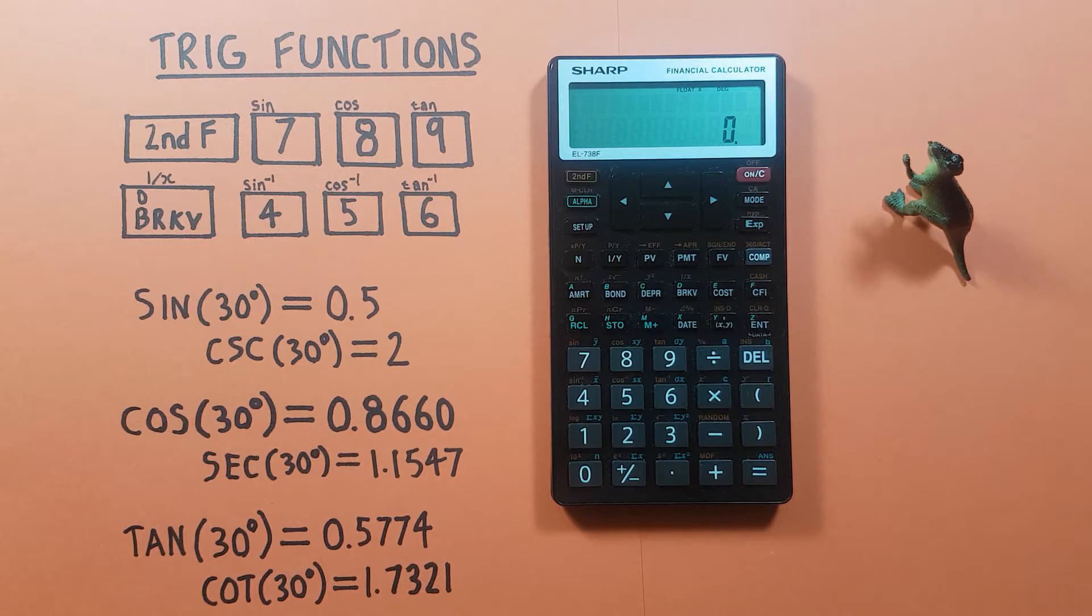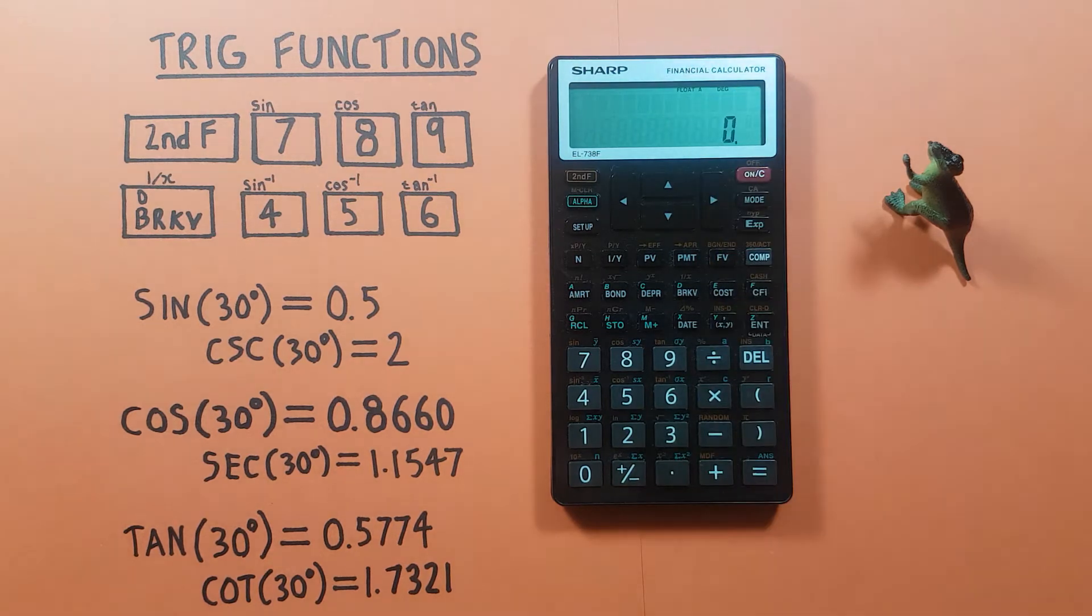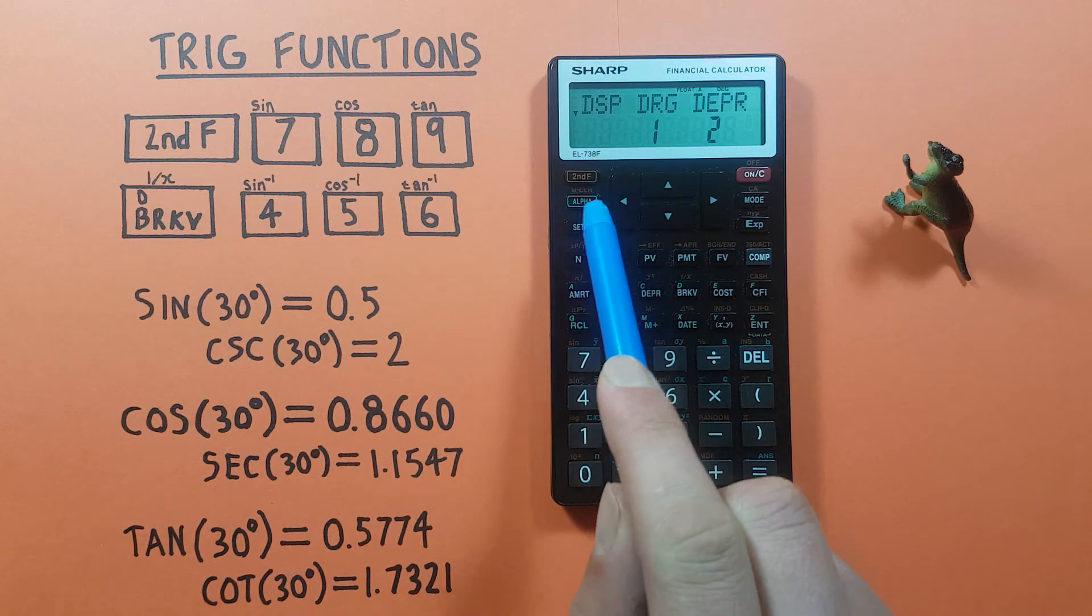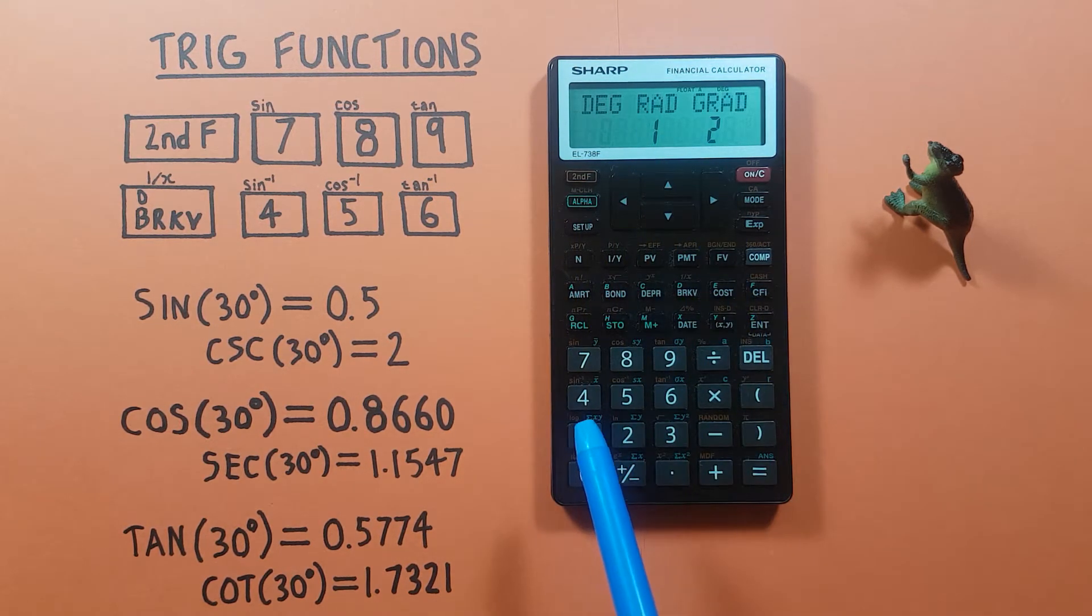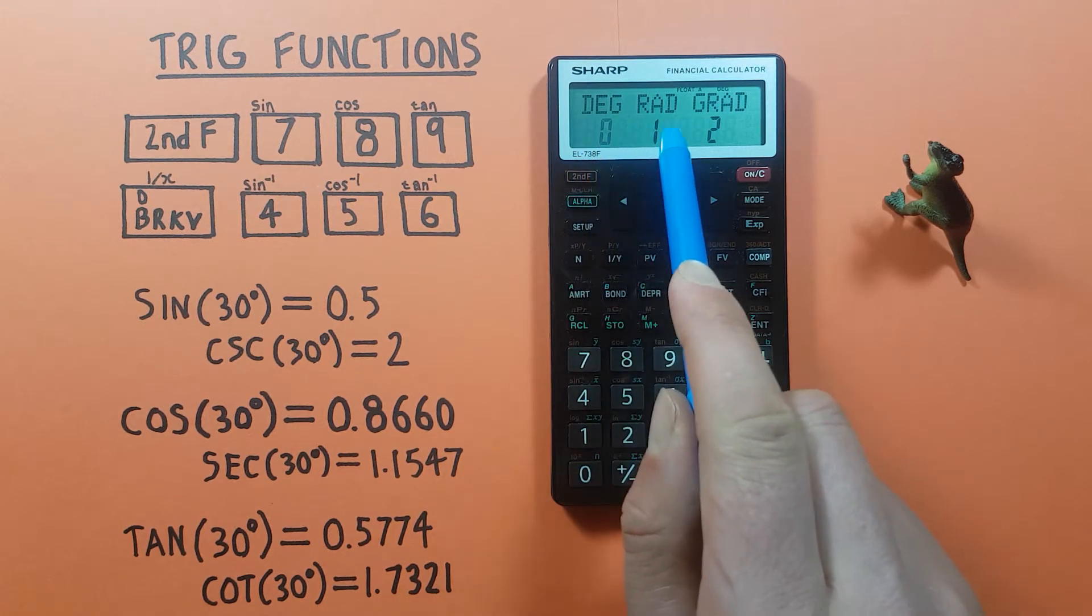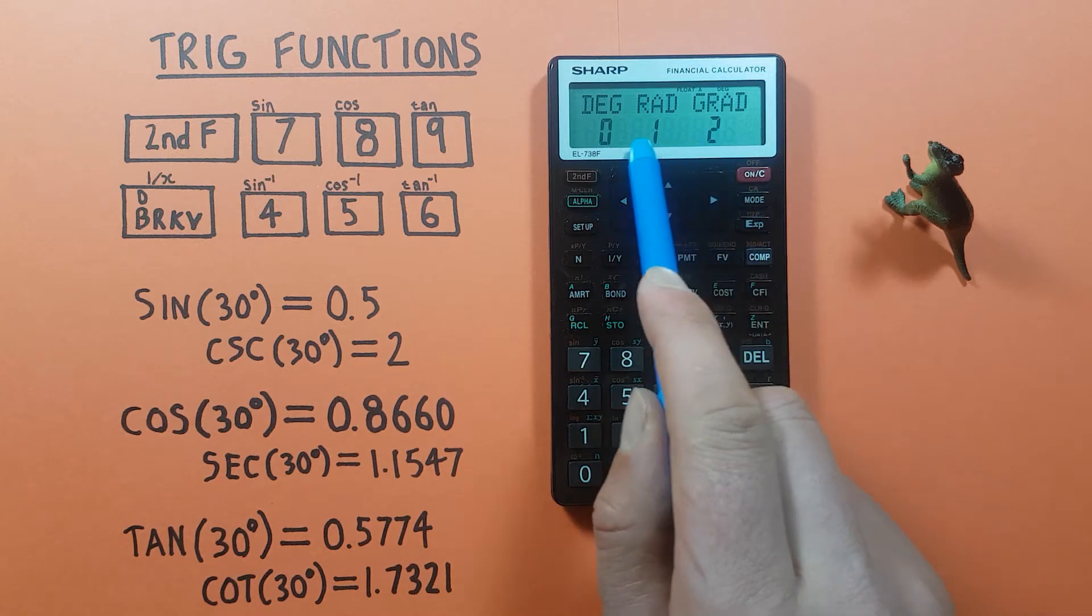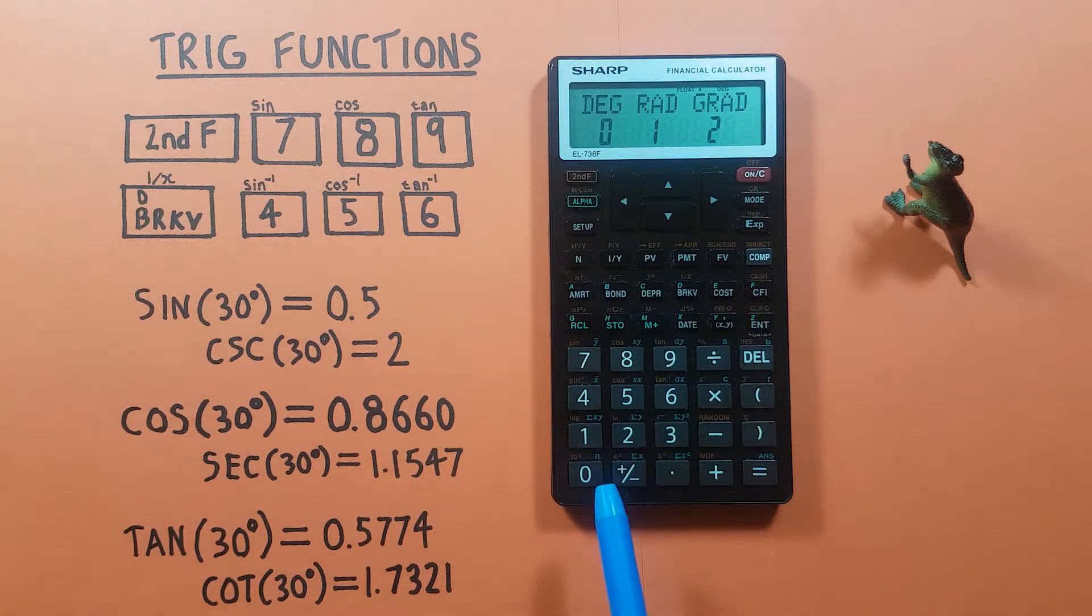Just a heads up, all these examples will be in degrees, so make sure your calculator says DEG at the top of the screen here. If it doesn't, you can turn this on by pressing the setup key and then one for DRG, and then zero to highlight DEG. If you're working with radians or gradients, you'll want to pick one or two for that, but for us we're using degrees so we'll go zero.